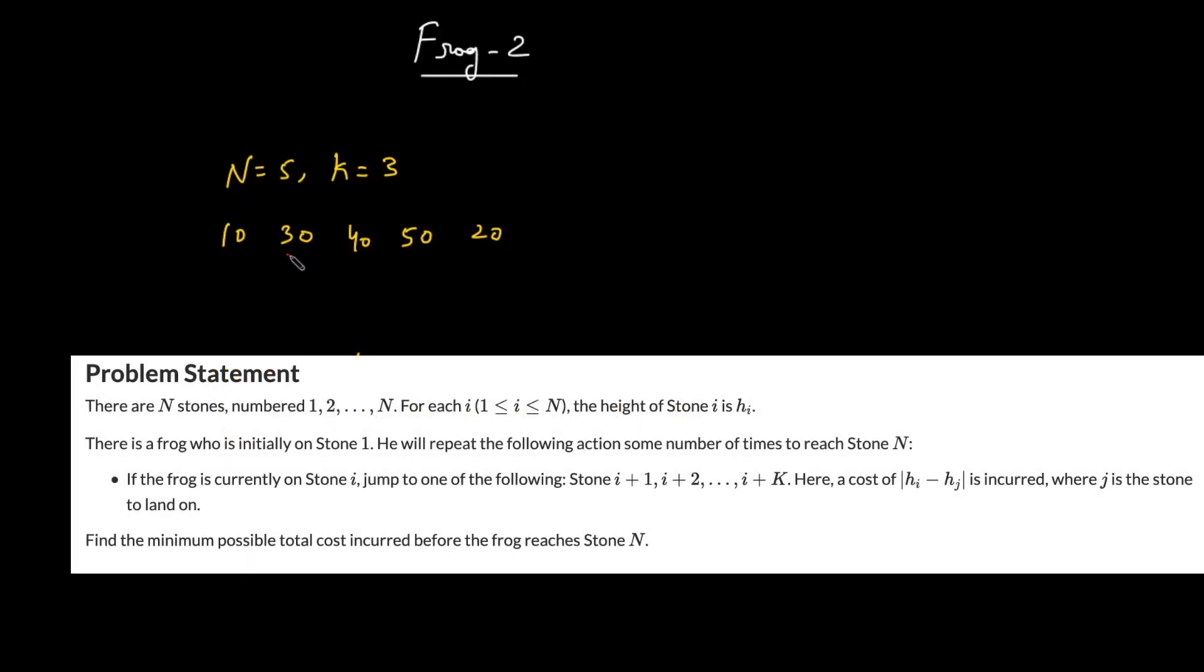So what does the problem state? The problem states you'll be given a frog who will be standing at the first index and you'll be given a value k. Starting from the first, you've got to reach till the last, and in doing so, you can only jump till k indexes from the index where you're standing.